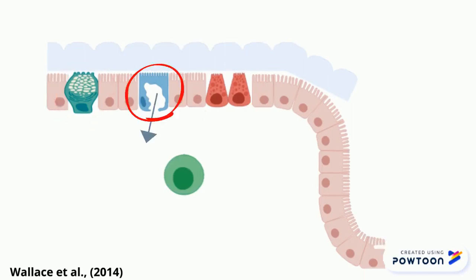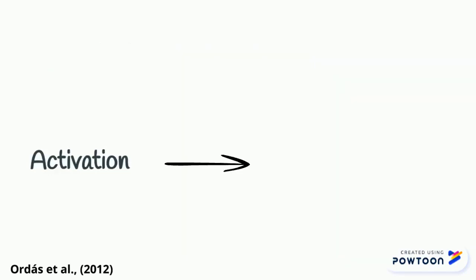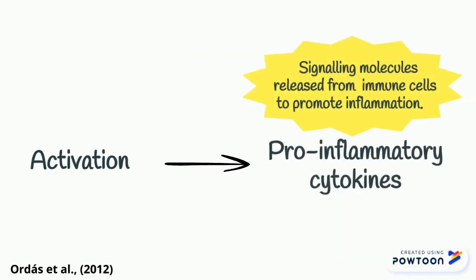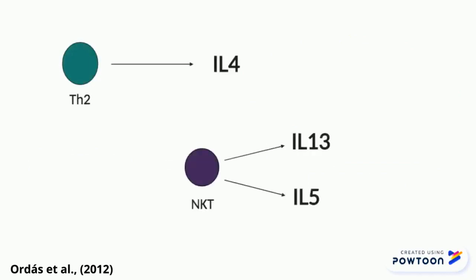It is hypothesized that the M cells transfer an antigen — a foreign substance that induces an immune response — from the lumen to the cells of the immune system. The antigen-presenting cell will process and present itself to T helper cells type 2 to activate it. Consequently, this activation causes the release of pro-inflammatory cytokines. The Th2 cells give rise to IL-4, while the expansion of NKT cells gives rise to IL-13 and IL-5.